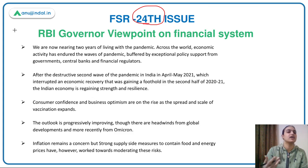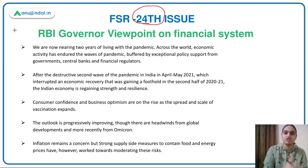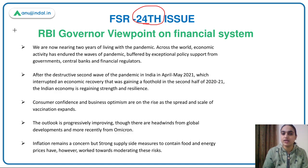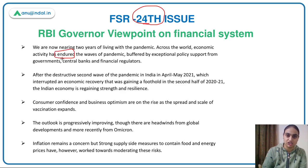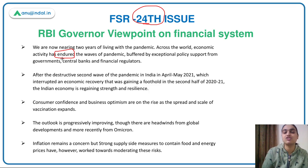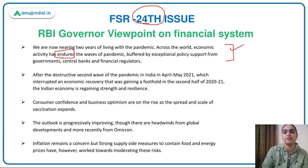RBI Governor Shaktikanta Das has expressed his viewpoint on the financial system. He says it has been nearly two years since we have been facing the pandemic, which has created many problems, but economic activity has endured the real waves of the pandemic. This has been possible because of the exceptional support provided by RBI, financial regulators, central government, and state governments.